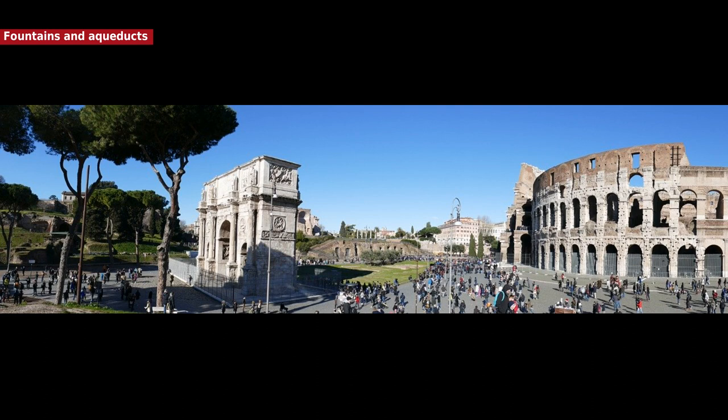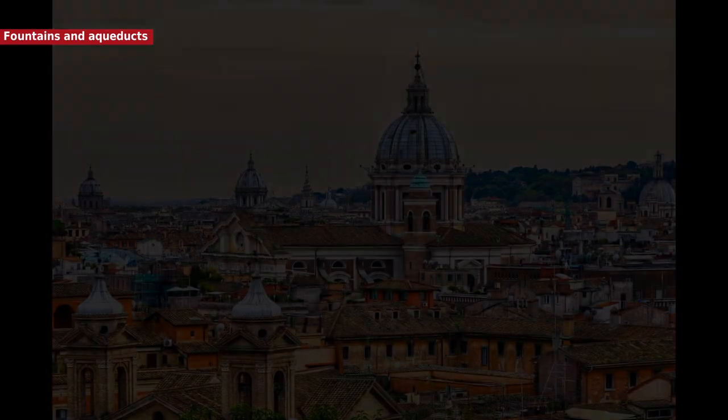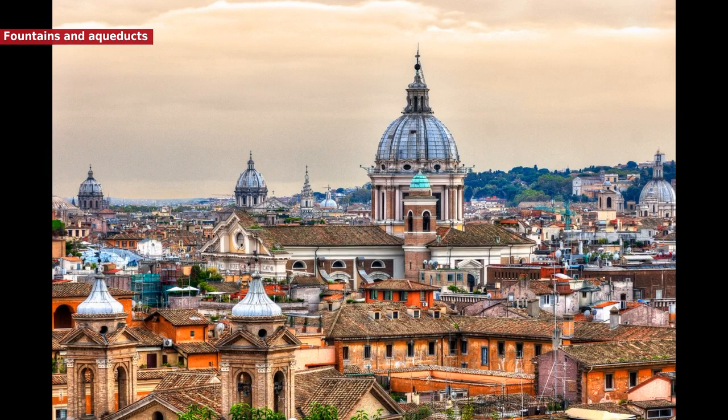Not counting the water supplied to the imperial household, baths, and owners of private villas. Each of the major fountains was connected to two different aqueducts, in case one was shut down for service. During the 17th and 18th century, the Roman popes reconstructed other ruined Roman aqueducts and built new display fountains to mark their termini, launching the golden age of the Roman fountain.